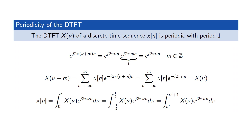Yet another property of the discrete time Fourier transform is that X(ν) will always be periodic with a period of 1. This is easily seen based on the periodicity of the complex exponentials — if we add an integer to the normalized frequency, we can prove this is equivalent to the complex exponential without the integer added. As a consequence, if we want to represent x[n] in terms of its discrete time Fourier transform, we don't have to integrate between 0 and 1 in the inverse transform, but can integrate over any arbitrary interval of length 1.